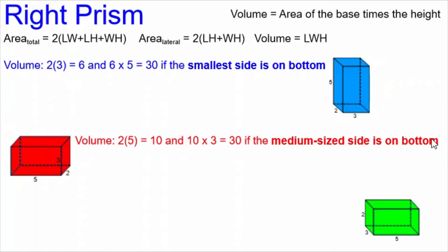But if we take the same right prism and put the medium sized side on the bottom, we're doing 2 times 5 and getting 10, and then we're multiplying that 10 by the height 3 and getting 30. We're getting the same answer.